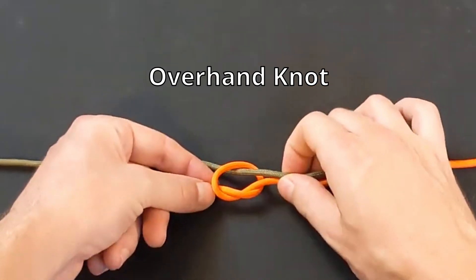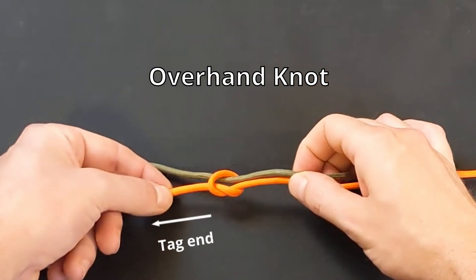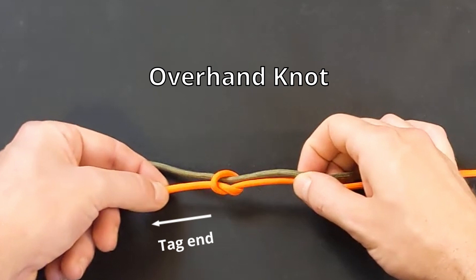This creates an overhand knot that encircles the other line, with the tag end pointing in the same direction as the original line.